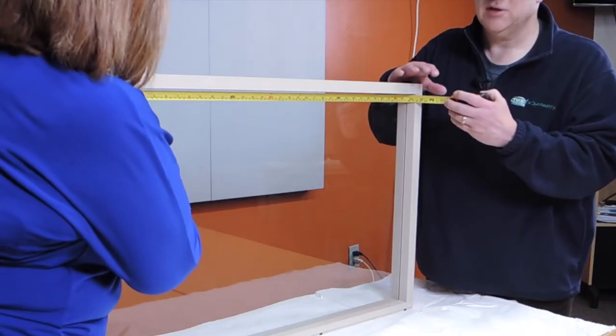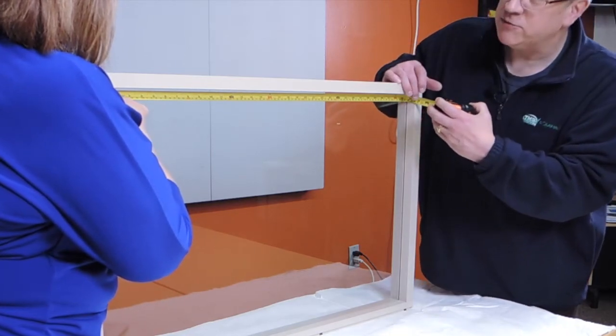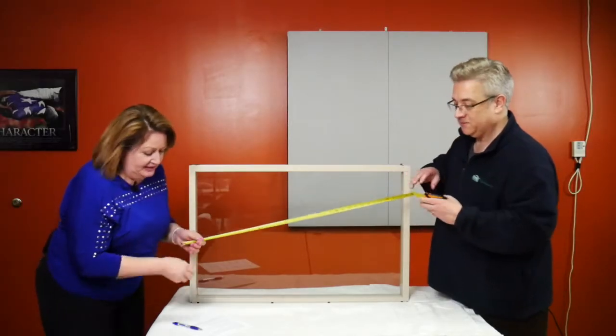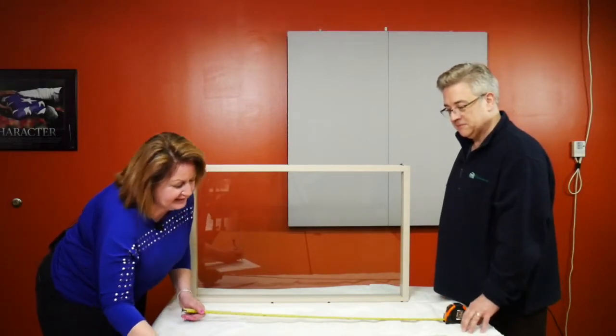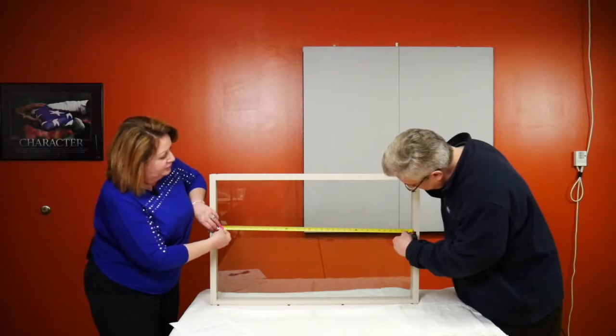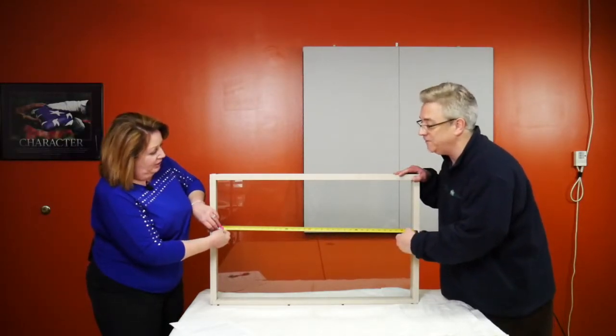What measurement do you have? This looks like 33 and three-quarters. Now let's do it in the middle. That is 33 and three-quarters also. Perfect. We're going to write that measurement down, 33 and three-quarters.